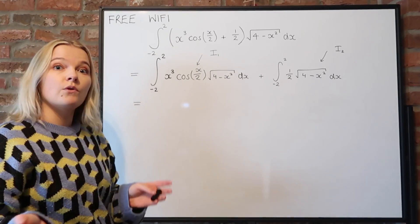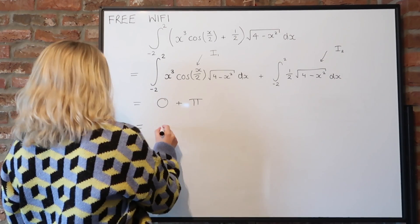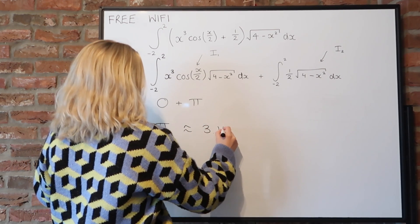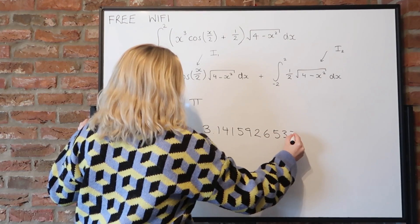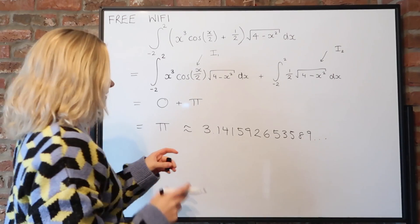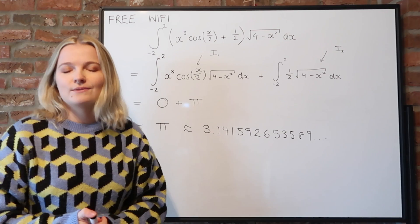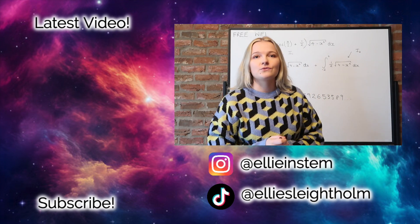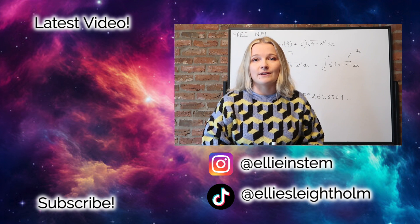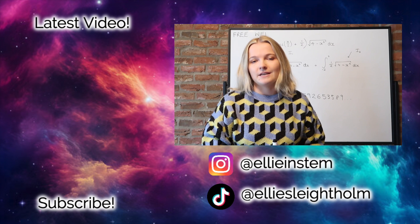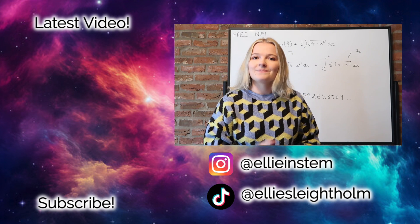Putting it all together: I1 plus I2 equals 0 plus π, so the answer is π, which is 3.14159265358979... The Wi-Fi password is π — you can take as many digits as you want. If you enjoyed the video, please like, subscribe, and comment, and I'll see you in the next one.